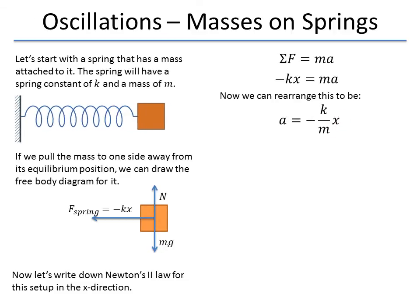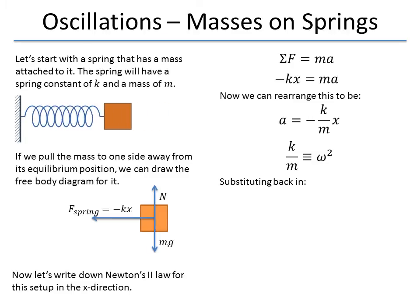this is going to give me harmonic motion. So, I'm just going to define omega squared to be k over m. And that's what's going to happen.